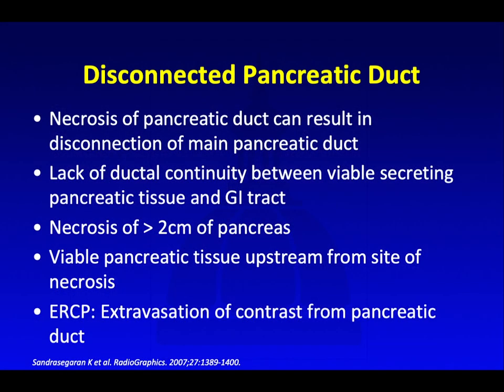Another complication of necrotizing pancreatitis is the disconnected pancreatic duct. Necrosis of the pancreatic duct can result in disconnection of the main pancreatic duct. Generally this condition involves necrosis of more than 2 cm of the pancreas, resulting in lack of ductal continuity between the viable secreting pancreatic tissue and the GI tract. This diagnosis is best made on ERCP, in which they can prove abnormal extravasation of contrast from the pancreatic duct, but I'll show some examples on CT and MRI.